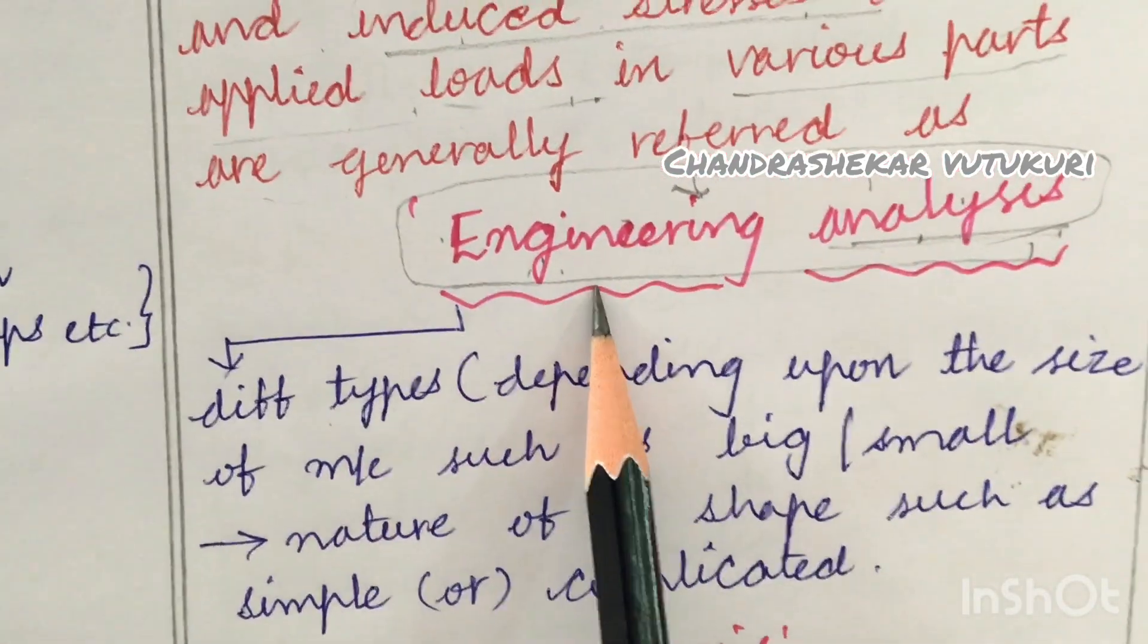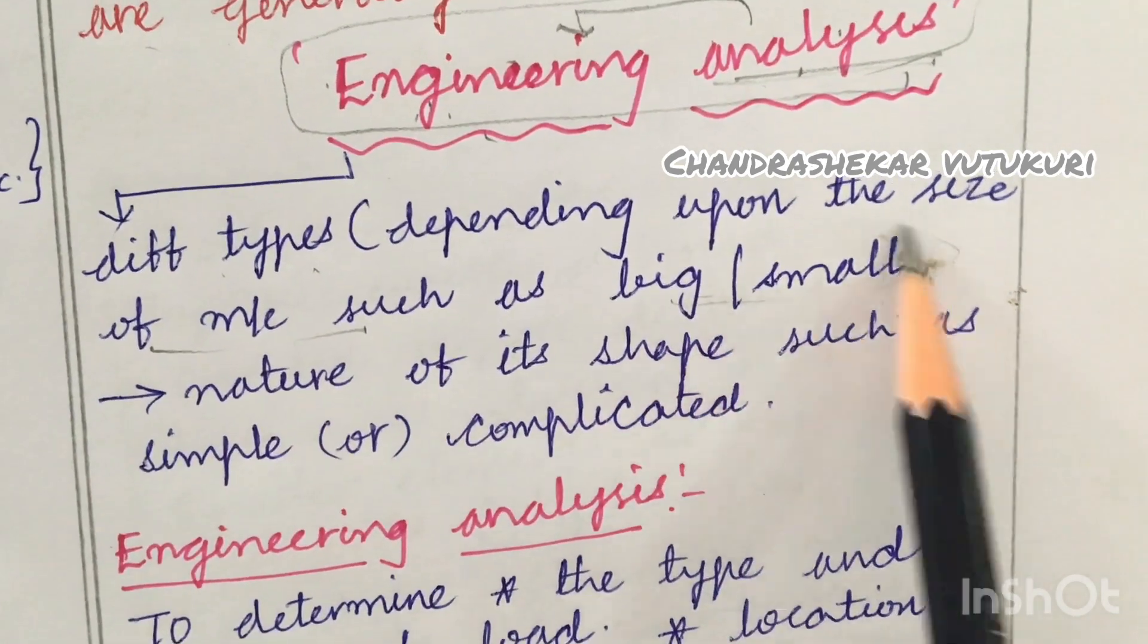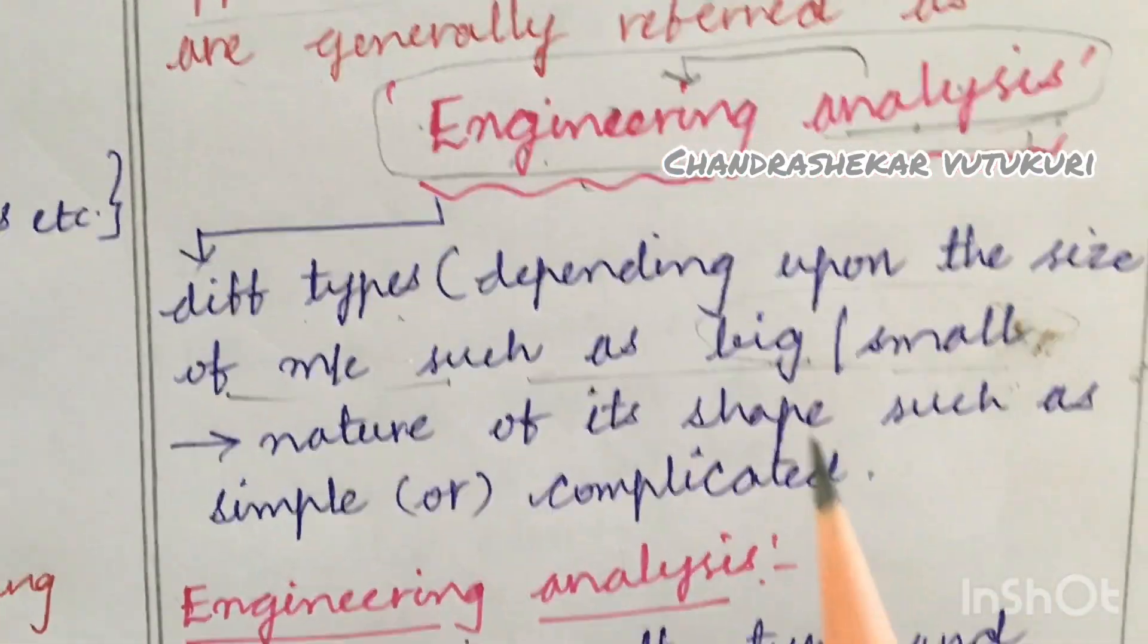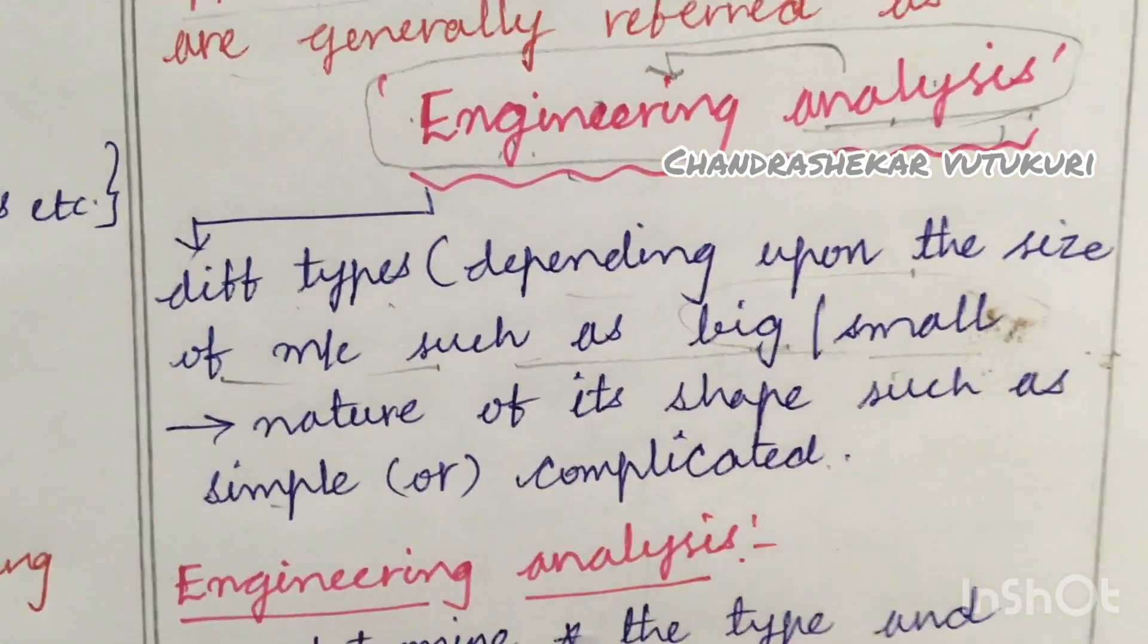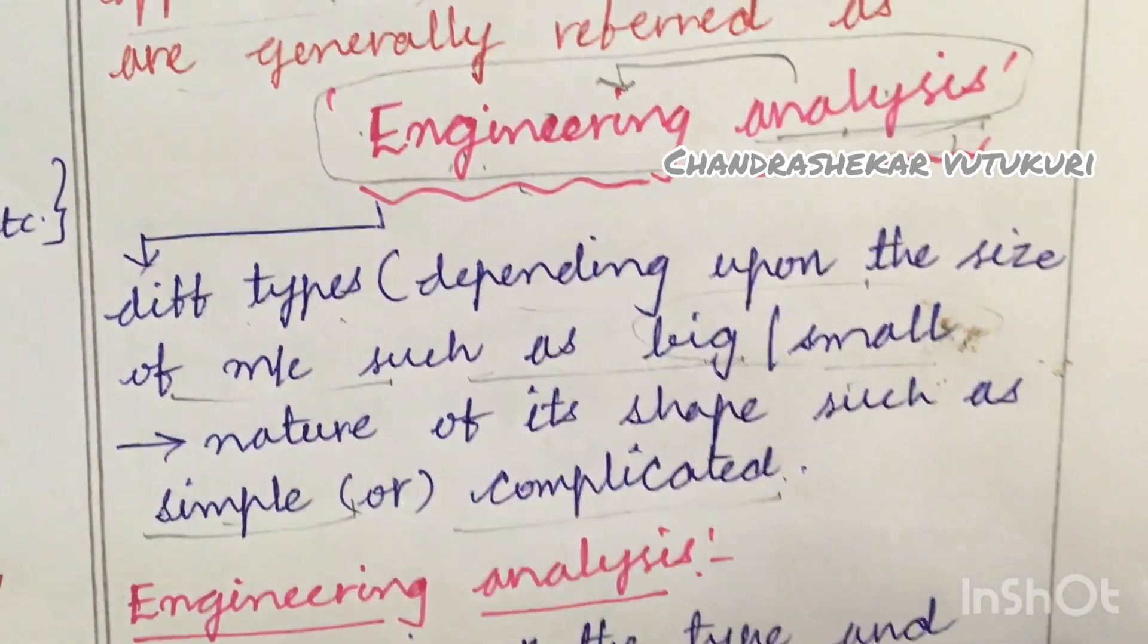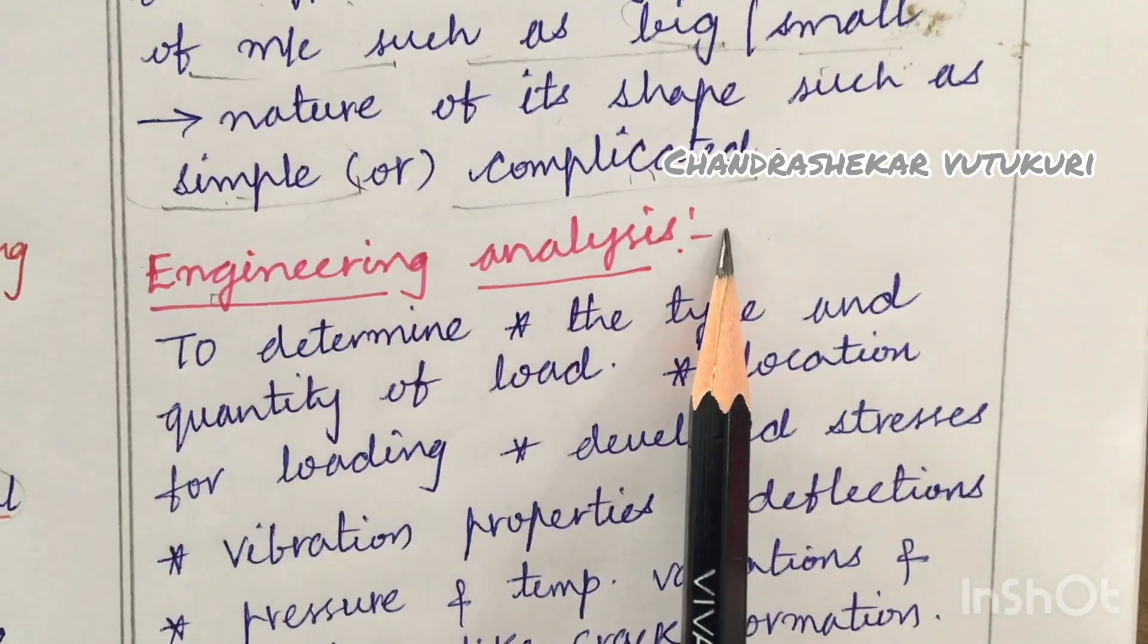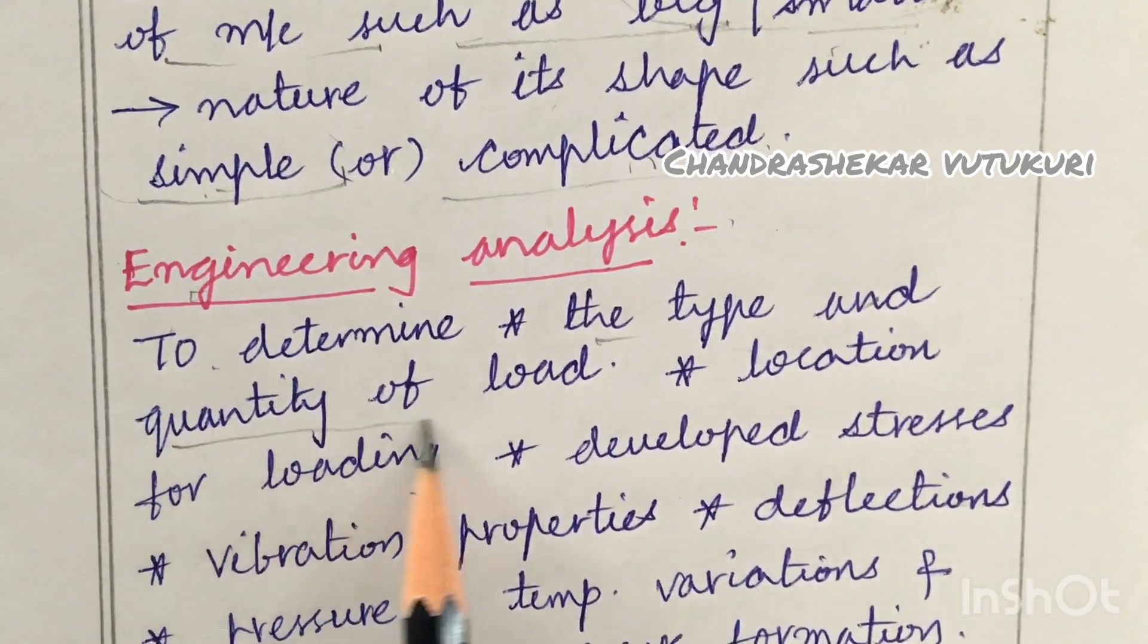There are different types of engineering analysis which I am going to explain in the next video. It depends upon the size of machine, such as big or small machines. Each machine has different deformation, different stress loads applied. And one more thing is the nature of its shape, as simple or complicated. Some components have simple shape, while some are complex and complicated which cannot be easily calculated. Simple or complicated machine shape - based on that we find out the engineering analysis.